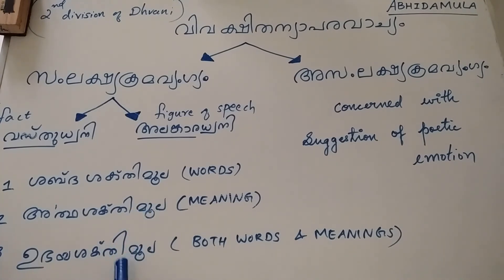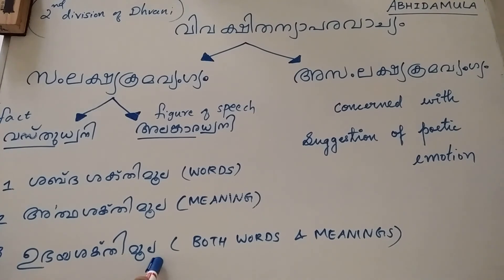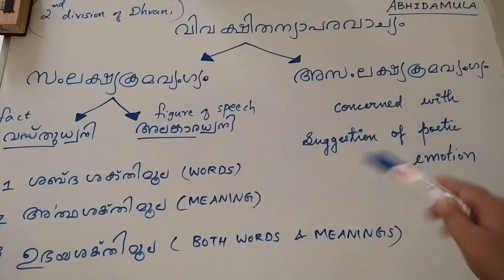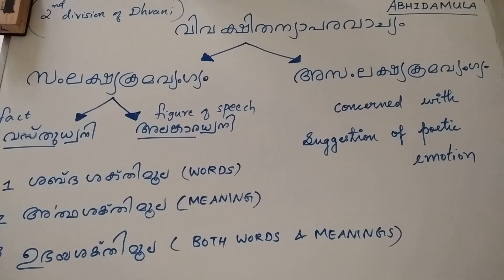The third one is Ubhaya Shakti Mula. Today we have tried to learn the second division of Dhvani, that is Vivakshitanyaparavachya, which is also known as Abhidha Mula because it is based on Abhidha or primary meaning — the expressed meaning.